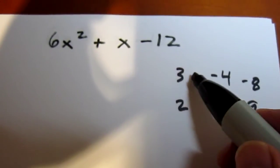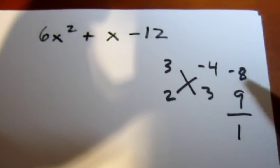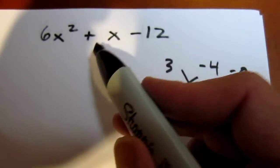That doesn't always happen, but 3 times 3 is 9, and 2 times negative 4 is negative 8. Negative 8 plus 9 is 1. That's what I wanted it to be.